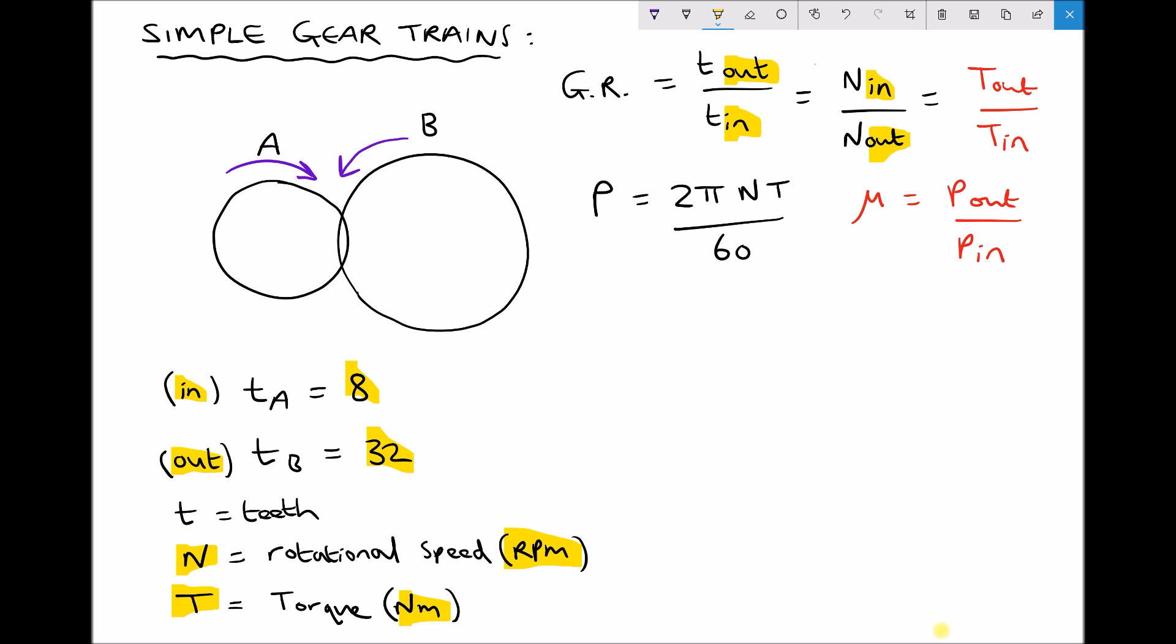But more often than not a gearbox won't be 100% efficient, so we need to use the formula below for efficiency mu. Before we can calculate or use the efficiency of the gearbox we need to be able to calculate the power because efficiency is output power divided by input power.